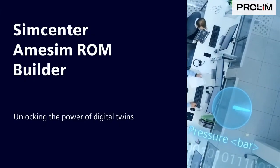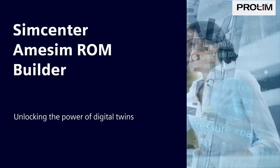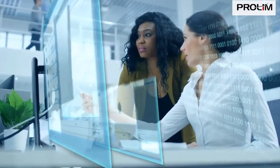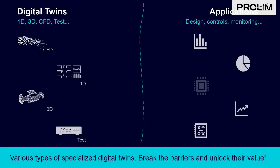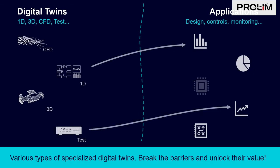In this video you will discover how to build reduced order models with Simcenter AIMSIM ROM Builder. Whether they come from simulation or test, digital twins are designed for very specific applications. By only conveying their core attributes, reduced order models extract more value from digital twins in a much broader context. For instance, reduced order models can extend the scope of other models or enable real-time applications.